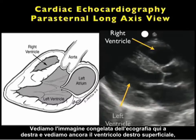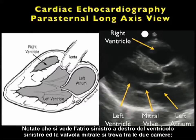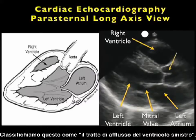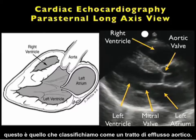Looking at the ultrasound still image here to the right, we again see the superficial right ventricle. Posterior, we see the left ventricle with its more muscular and hypertrophic walls. Notice the left atrium to the right of the left ventricle and the mitral valve in between the two chambers — we categorize this as the left ventricular inflow tract. Note the aortic valve sitting right above the left atrium, with a little bit of the aortic root — this is what we categorize as the aortic outflow tract.